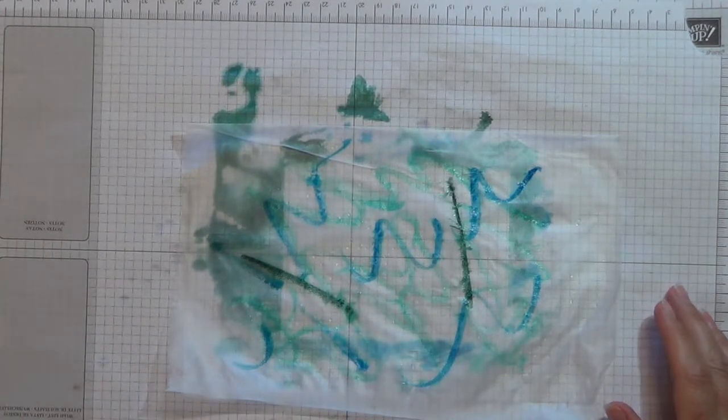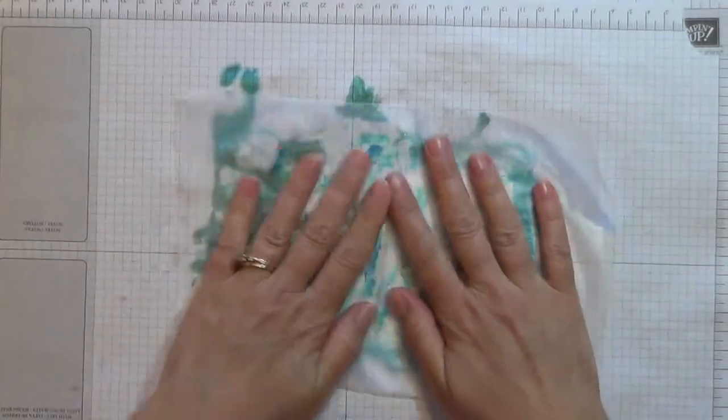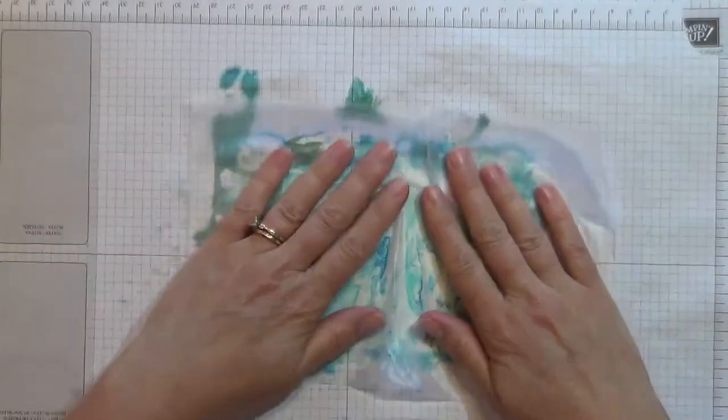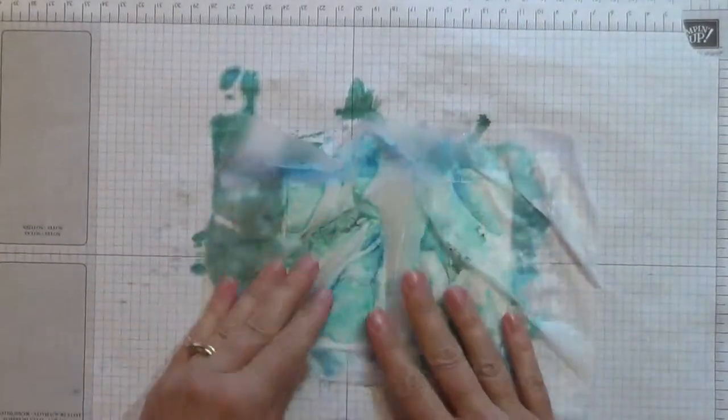Spritz with the water. And just run this over on there. Again, if it's a little crinkled. In fact, I think I'm just going to crinkle a little extra on purpose here.